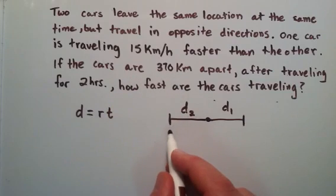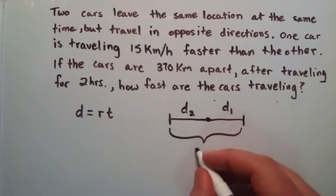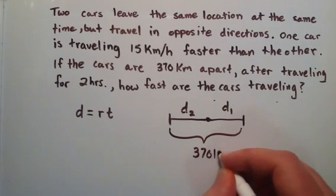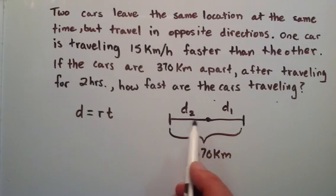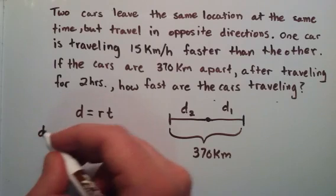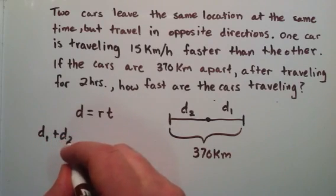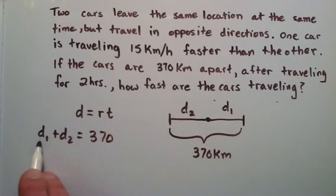From the problem we know that the distance the cars are apart after two hours is 370 kilometers. So the distance car one has traveled in two hours plus the distance car two has traveled equals 370 kilometers. So d1 plus d2 equals 370.